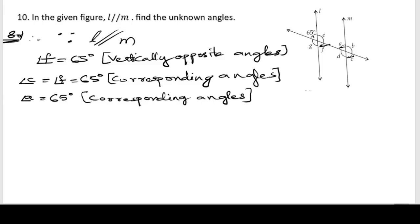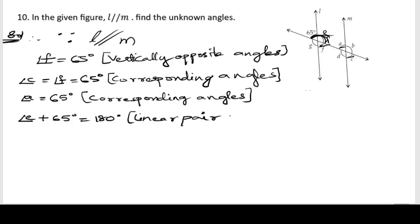We know that the sum of angle E and 65 will give us 180 degrees, since they are forming a linear pair. So we write: angle E plus 65 degrees equals 180 degrees, because it is a linear pair. Sending 65 to the other side, angle E equals 180 degrees minus 65.